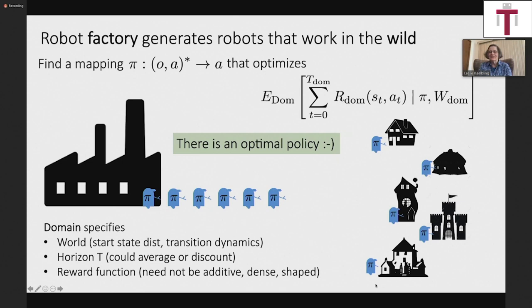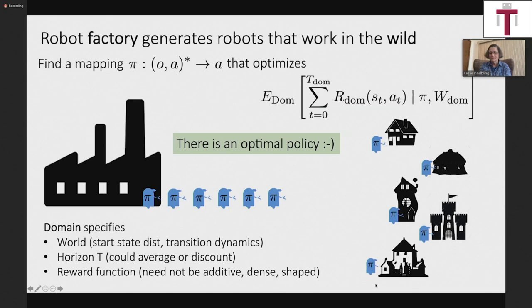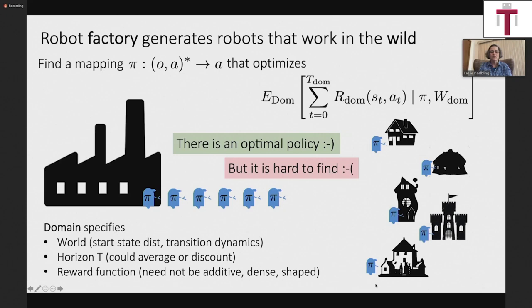If we could understand a distribution over domains and specifications of what the robot is supposed to do, then we wouldn't need to fight about whether it should be neural or symbolic, or whether it should learn or not — because for that distribution of problems there really is, in some sense, an optimal strategy. But even though that optimal strategy might exist, it's a hard job for us as engineers to actually find it. That's what I mostly want to think and talk about: how can we, as engineers, come up with good policies to put in the head of the robot?